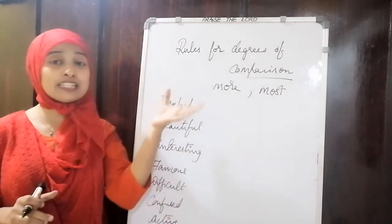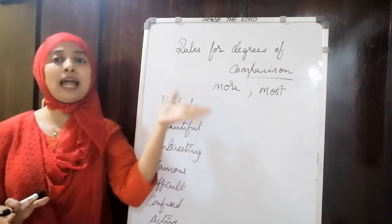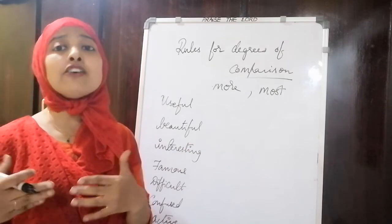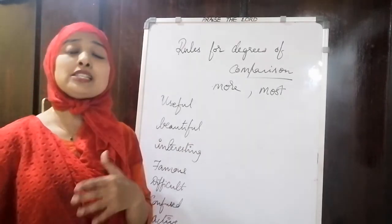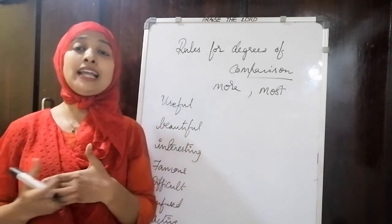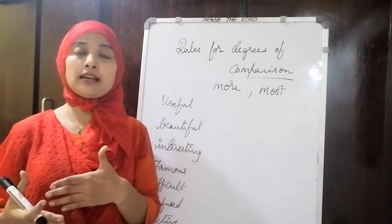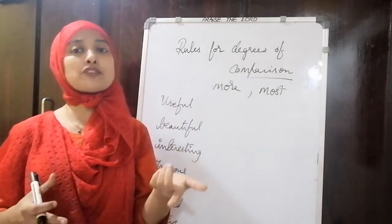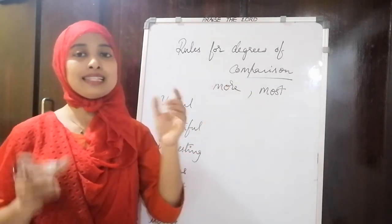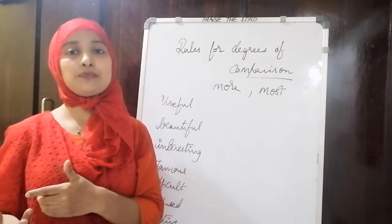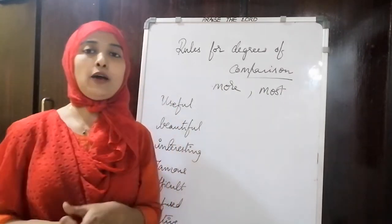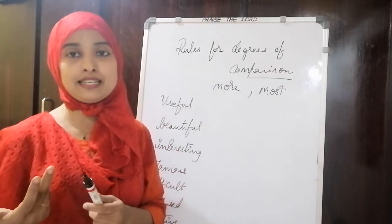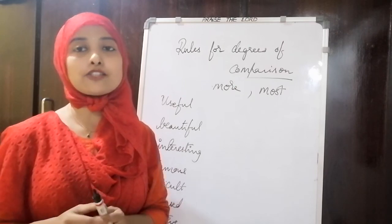These are all regular adjectives which do not change their word forms entirely. There is one more category called irregular adjectives, where the complete word form changes — we will see that in the next video. Try to practice and make sentences using the degrees of comparison. Thank you.